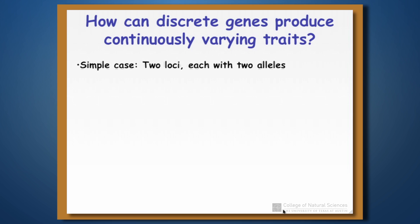Let's look at a really simple case to start with. We're going to look at two loci, each with two alleles. We have loci A and B. Within A we have alleles big A and little a, and within B we have big B and little b. For now, let's assume all of these alleles are at equal frequencies — 50/50 for big A and little a, and 50/50 for big B and little b.